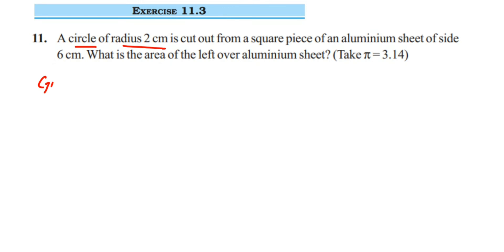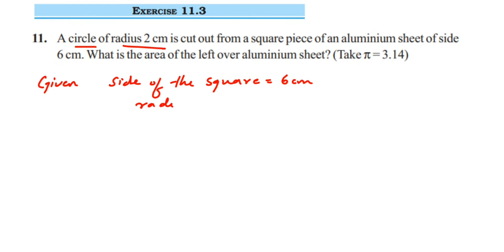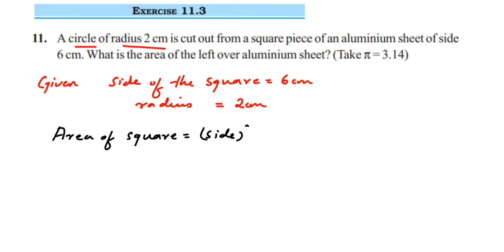Given: side of the square is equal to 6 centimeter, and the radius of the circle is equal to 2 centimeter. First, let's find the area of the square. Area of square equals side squared, so 6 squared equals 36 centimeter square.